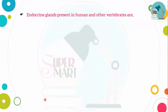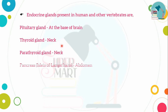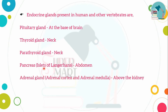Endocrine glands in the human body include: the pituitary gland in the brain, thyroid gland in the neck, parathyroid gland, pancreas in the abdomen, adrenal gland, and gonads in the pelvic cavity.